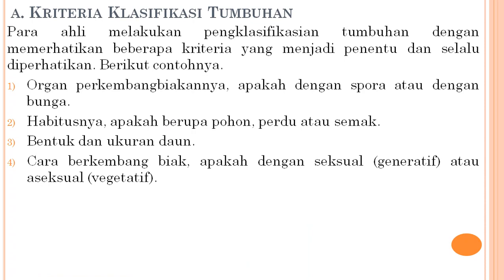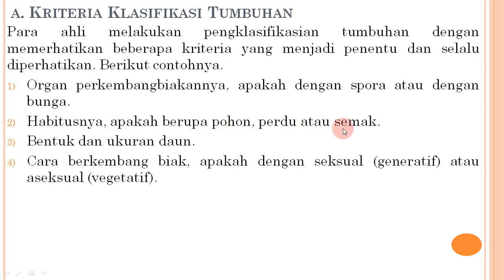Bagaimana kriteria klasifikasi tumbuhan? Para ahli mengklasifikasikan tumbuhan dengan memperhatikan: pertama, organ perkembangbiakan, apakah dengan spora atau bunga; kedua, habitusnya, apakah berupa pohon, perdu, atau semak; ketiga, bentuk dan ukuran daun; keempat, cara berkembang biak, apakah seksual (generatif) atau aseksual (vegetatif).